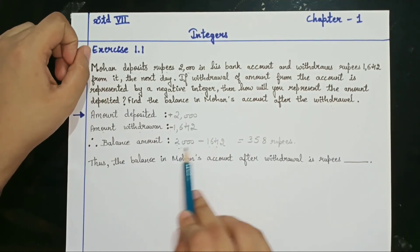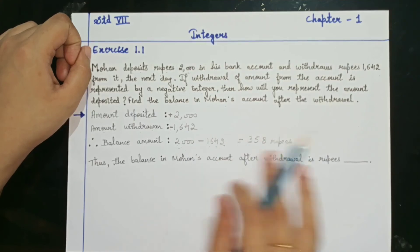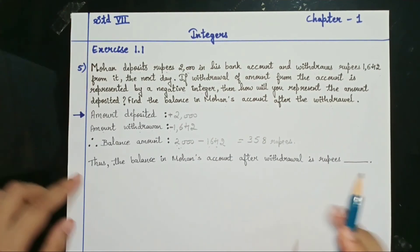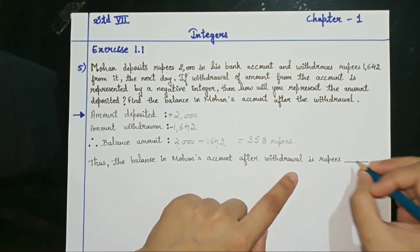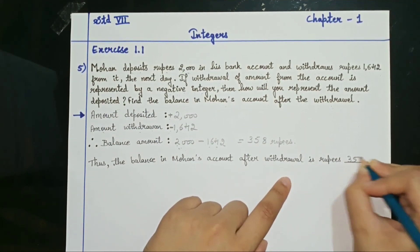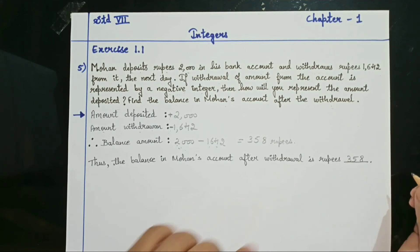This is just to confuse you with these last two steps. You have to just do simple subtraction, it is nothing much. So finally you have to write: the balance in Mohan's account after the withdrawal is rupees 358 only.